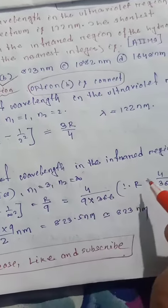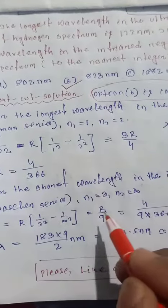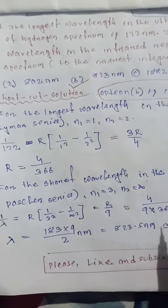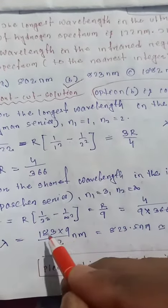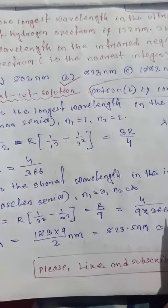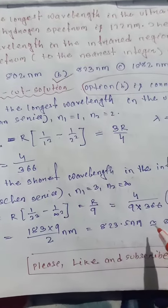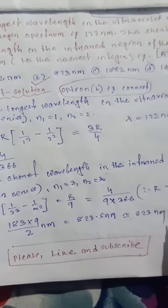The value of R equals 4 by 366. Now substitute the value of R. So we get 2, cancel 2 with 366 to get 183. So 4 over 183 times 9. We get 823.5 nanometers, which equals 823 nanometers.